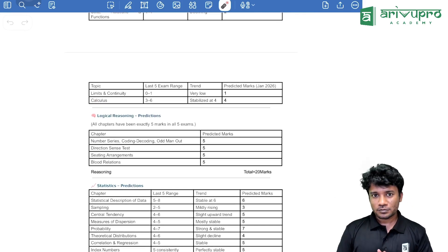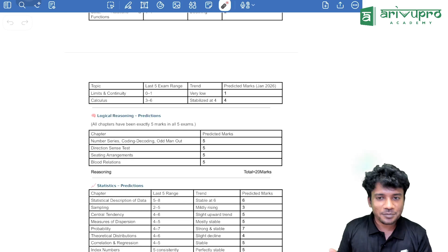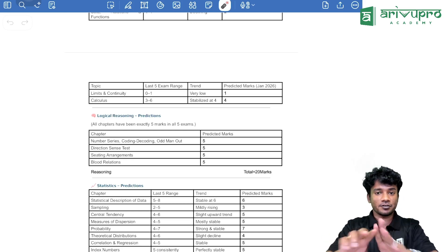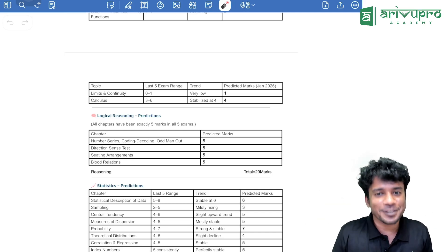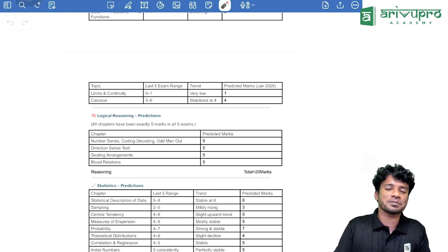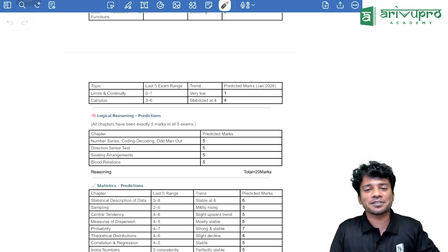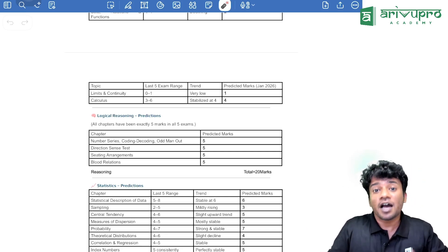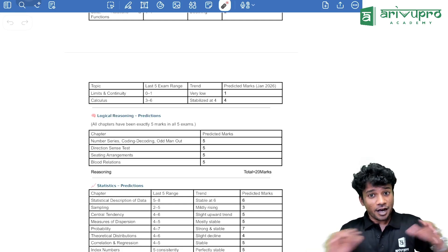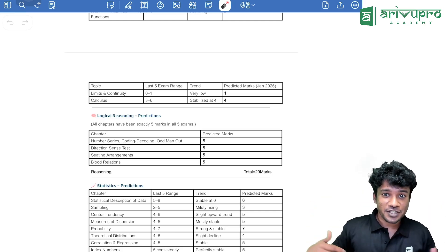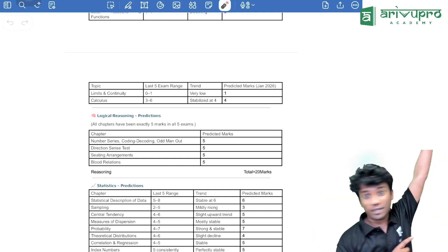So, this is the prediction we can have for our coming Jan 2026 attempt, people. Now, the PDF, this current PDF, whatever I have discussed, will be there in the description box. You can use the PDF and go about it. Do well in your examination for the coming attempt, that is Jan 2026. Our marathon video is already updated and it is available in our channel. I will mention the link also over here or something.